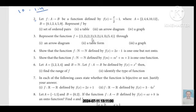Let f: A → B be a function defined by f(x) = x/2 - 1, where A = {2, 4, 6, 10, 12} and B = {0, 1, 2, 4, 5, 9}. Represent f by set of ordered pairs, table, arrow diagram, and graph.